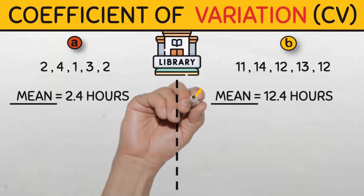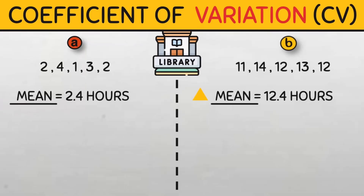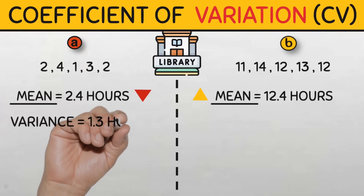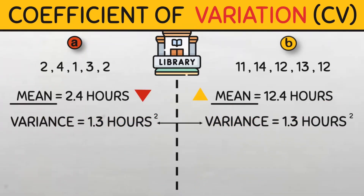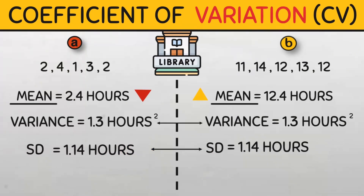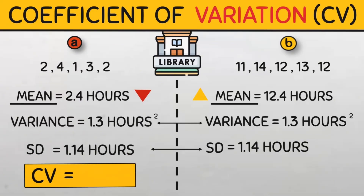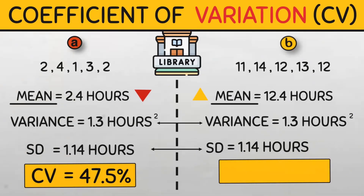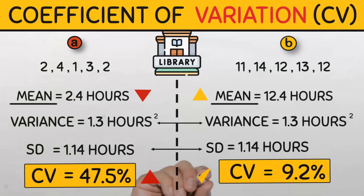So clearly, data set A has a much higher coefficient of variation at 47.5% compared to data set B which is just 9.2%. Let's start from the mean — the higher mean of data set B clearly shows that its data points are generally of greater magnitude than those of data set A, but this is a measure of central tendency and does not tell us anything about the variation. However, both data sets have the same absolute variability: the variance is 1.3 hours squared for both and the standard deviation for both is 1.14 hours. This equal variance and standard deviation suggests that the data points in both data sets are spread out to a similar extent.